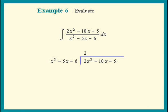2 times the divisor gives us 2x squared minus 10x minus 12. Draw a line. The next step is to subtract. So the only thing left is the negative 5 plus the 12, and that gives us 7, the remainder.